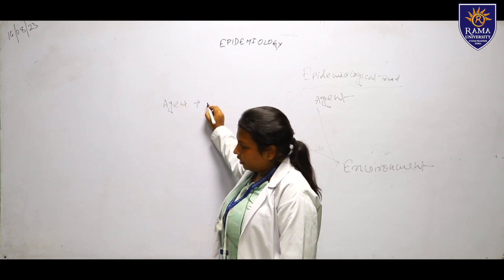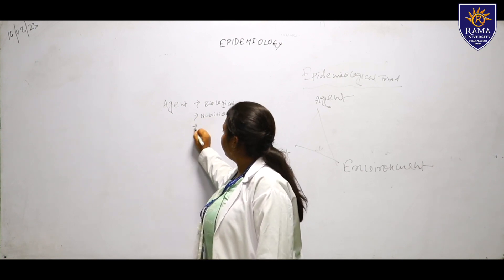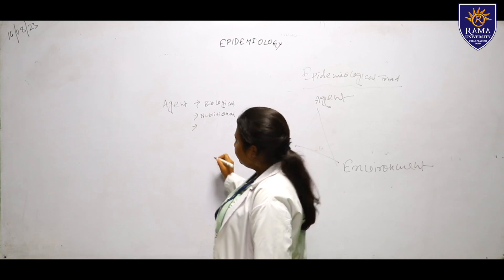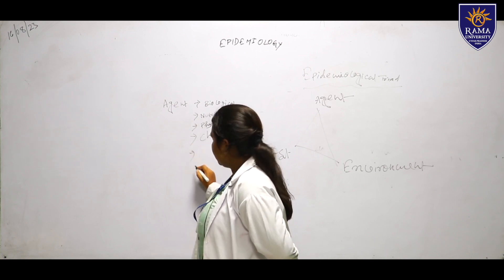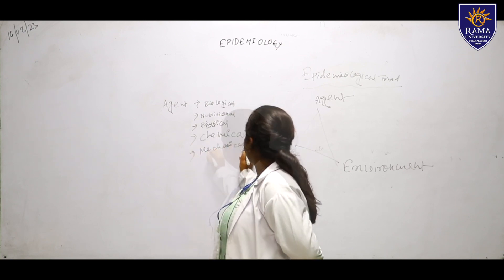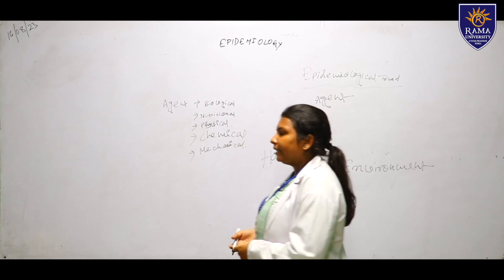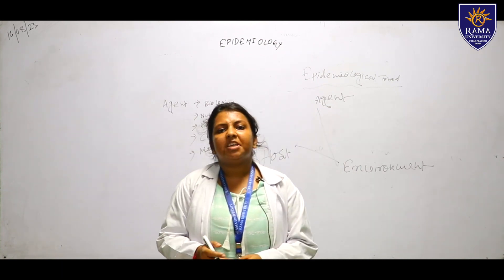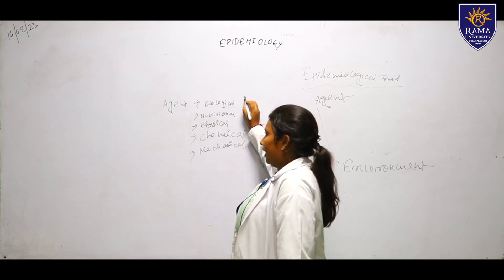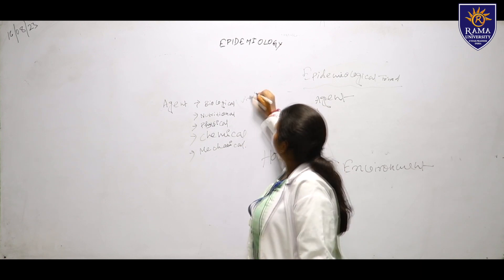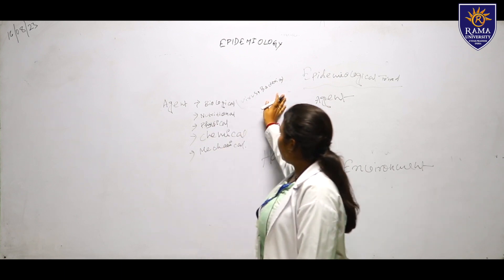Under the agent, there are several types: first is biological, second is nutritional, third is physical, fourth is chemical, and fifth is mechanical agent. The biological agent refers to any type of bacteria, virus, or living organism that causes any type of disease — any virus or bacteria falls under biological agent.